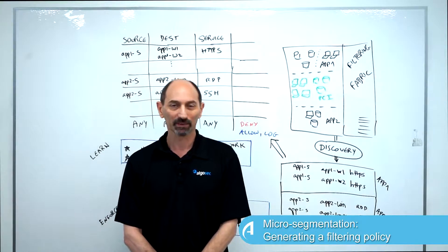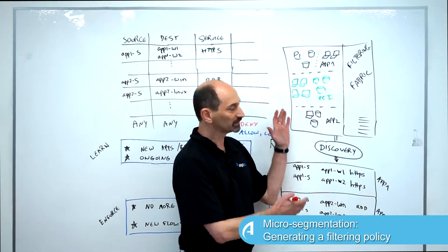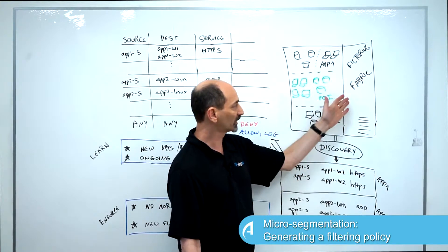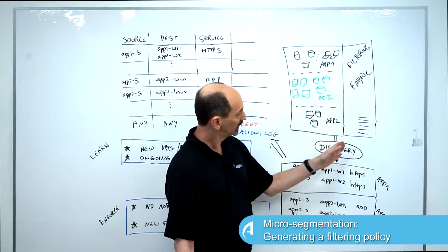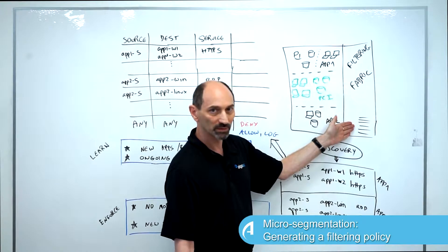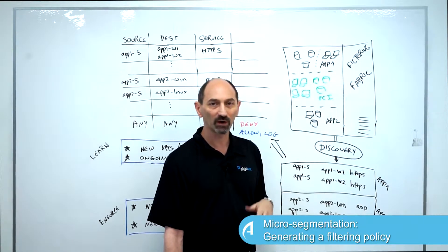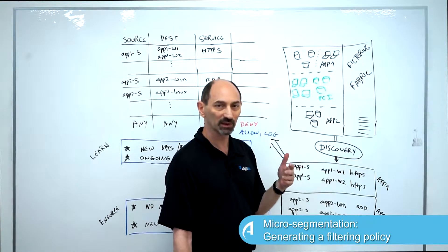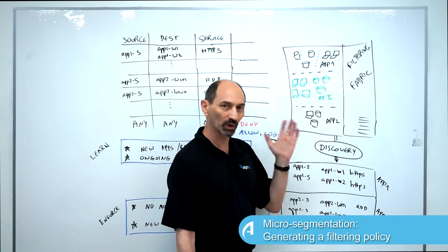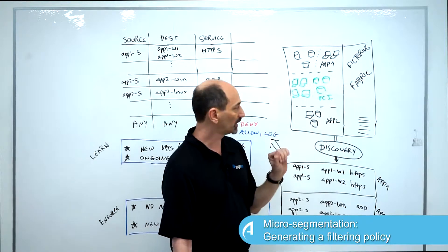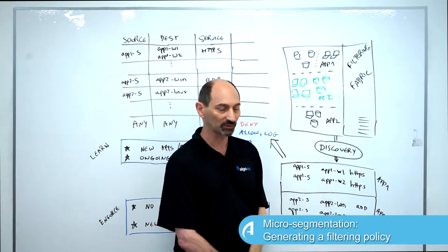So let's recap. We have a virtualized data center that has a filtering fabric in it. This filtering fabric allows us to write policy rules that determine which communication flows are allowed in the data center and which are not. And what we want to do is actually write these policy rules so that the enforcement is active.